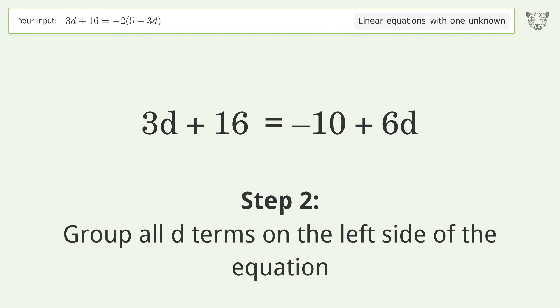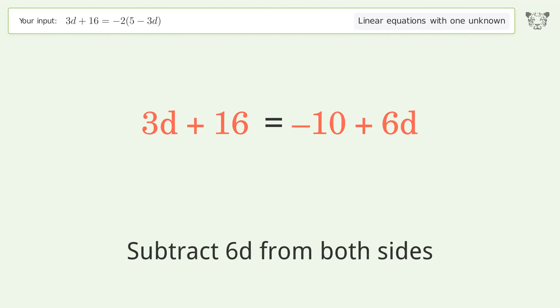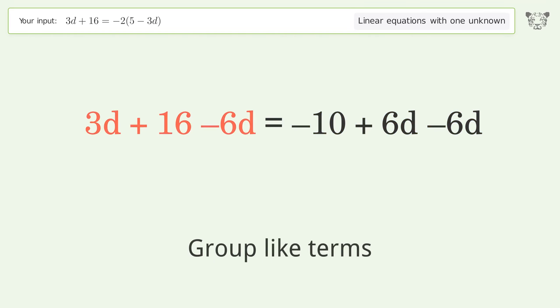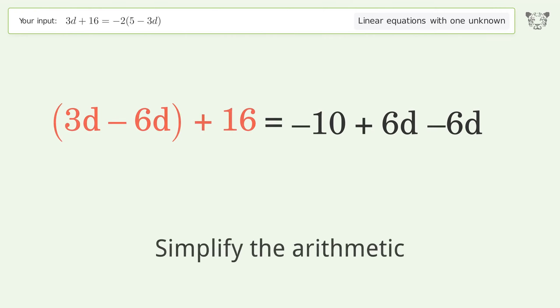Group all d terms on the left side of the equation by subtracting 6d from both sides. Group like terms and simplify the arithmetic.